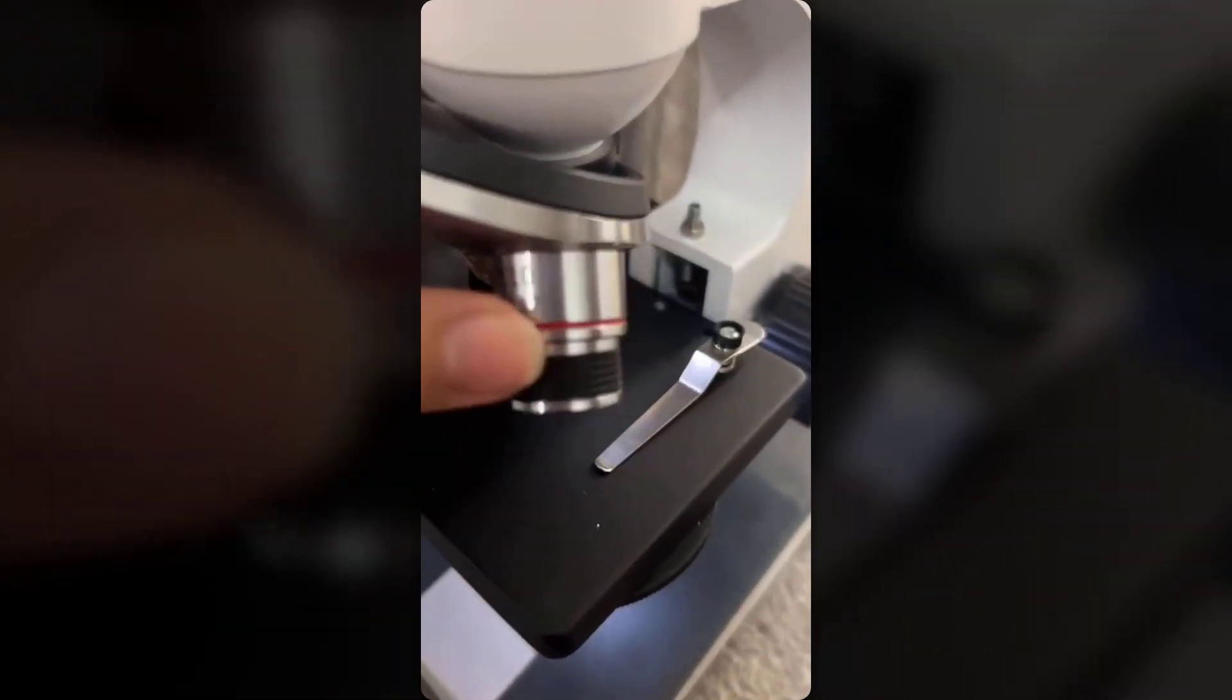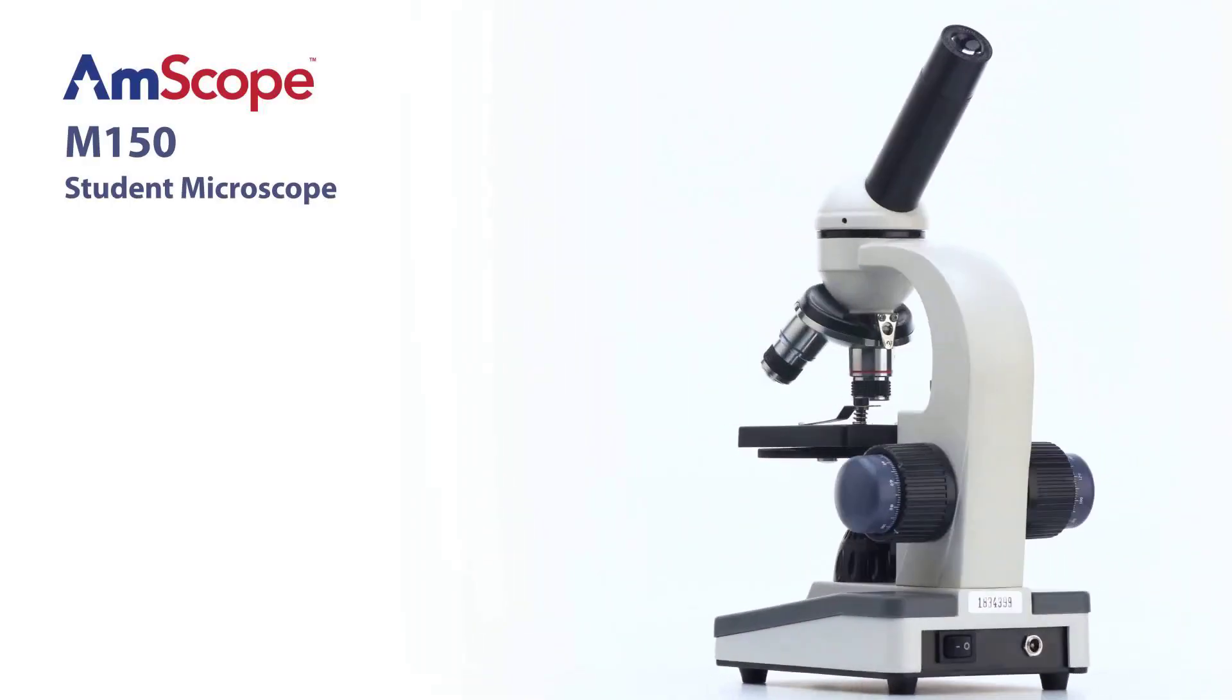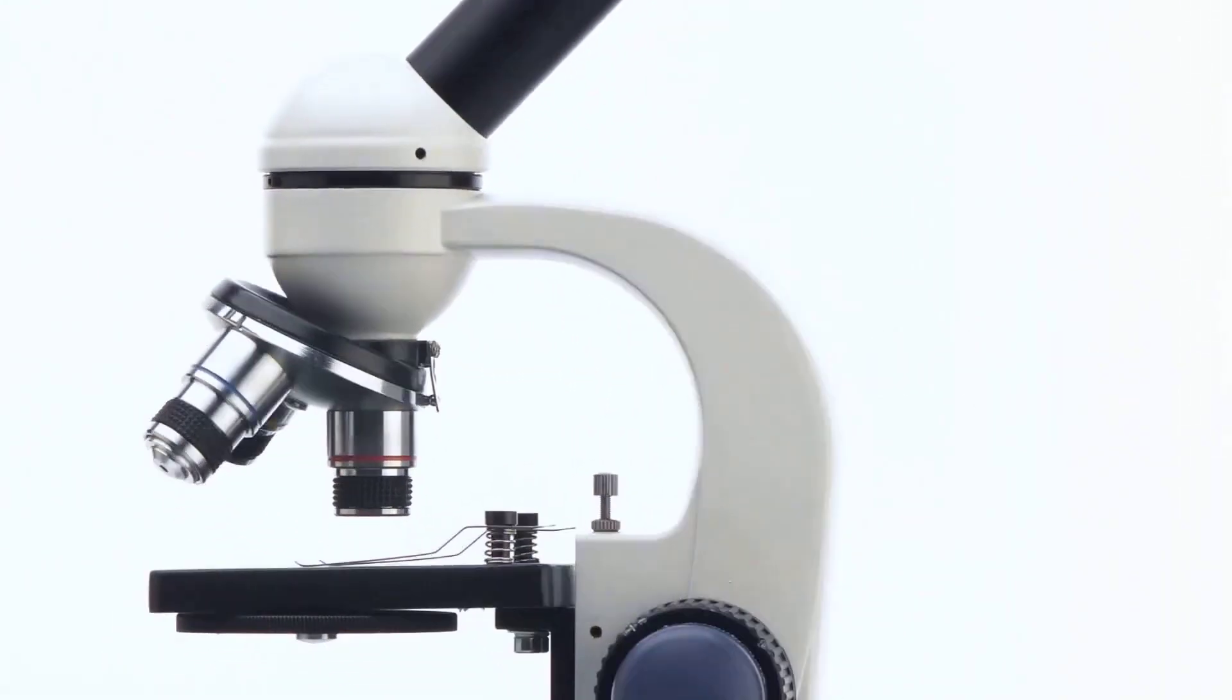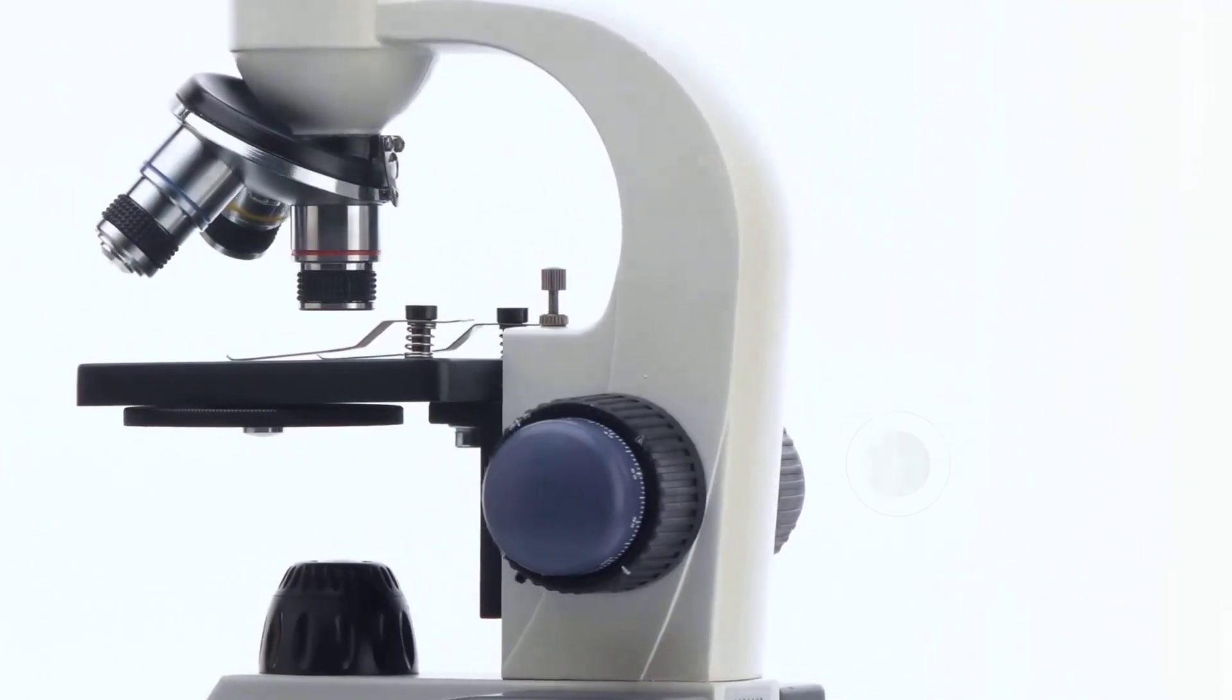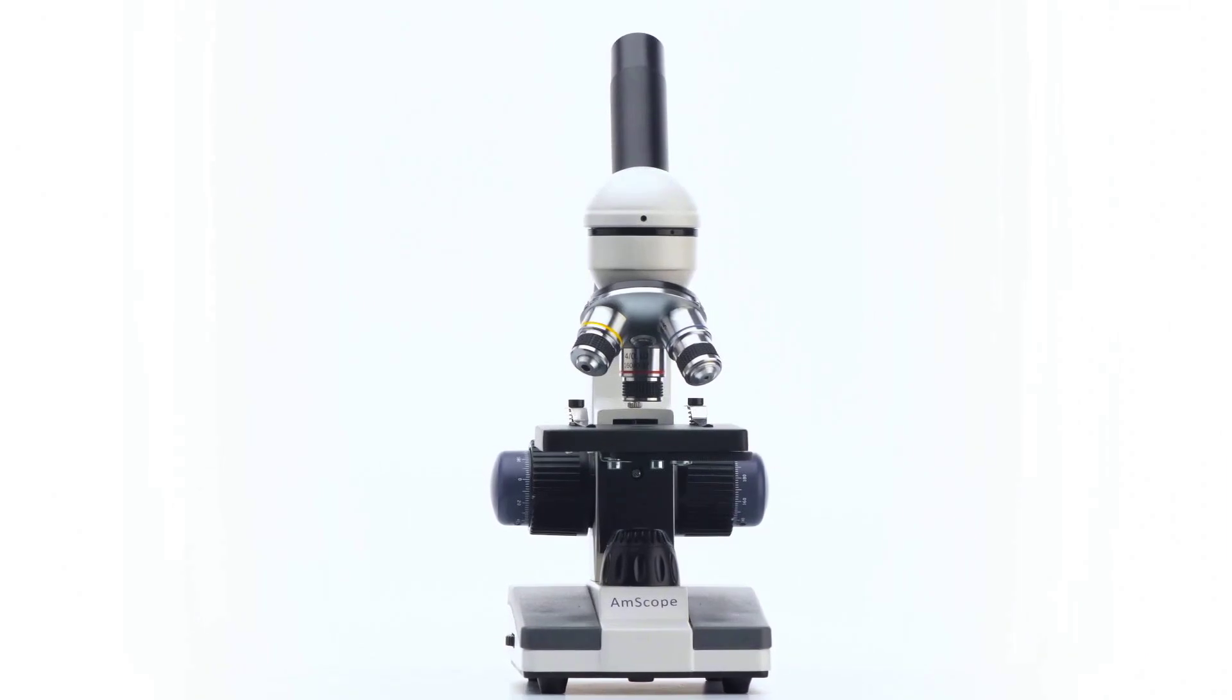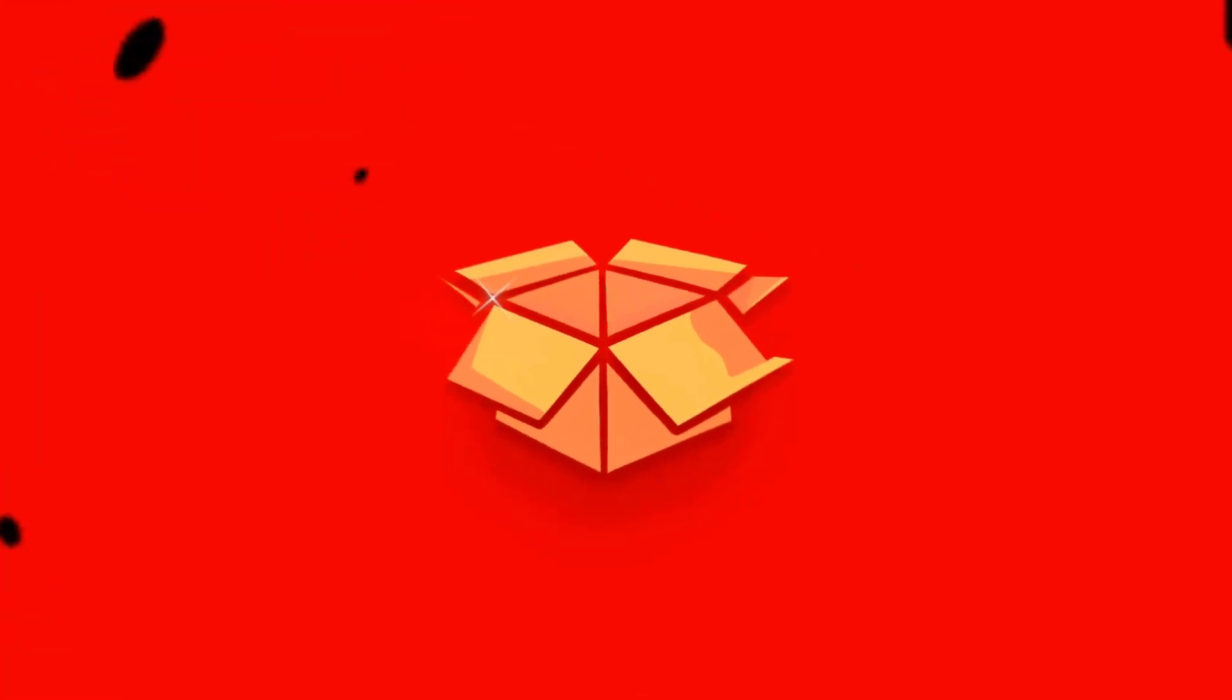The thoughtful inclusion of a protective dust cover and backup eyepiece enhances the overall package. Although other options include more extensive slide collections and accessories, the M150 emphasizes essential functionality and mobility. This focused approach makes it particularly suitable for beginners and educational applications, delivering professional-grade performance at an accessible price point. The Amscope M150 represents outstanding value in its category. Its combination of durability, portability, and superior image quality creates an excellent tool for microscopic exploration. While it may not include extensive accessories found in other kits, its streamlined design makes it ideal for users seeking reliable, on-the-move observation capabilities.